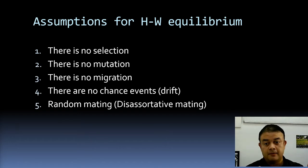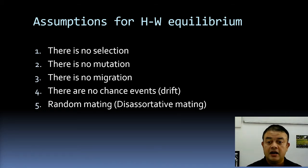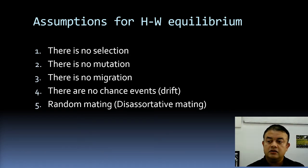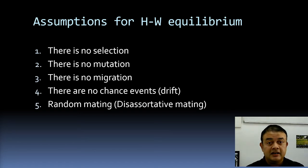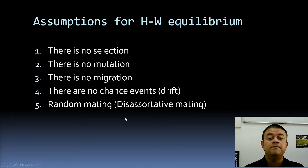The assumptions of the equilibrium include no selection, no mutation, no migration, no drift, and no assortative mating — mating must be completely random. Migration means the movement of individuals between two populations. If any of these assumptions gets invalidated, the equilibrium is violated, and the total allele frequency no longer equals one.